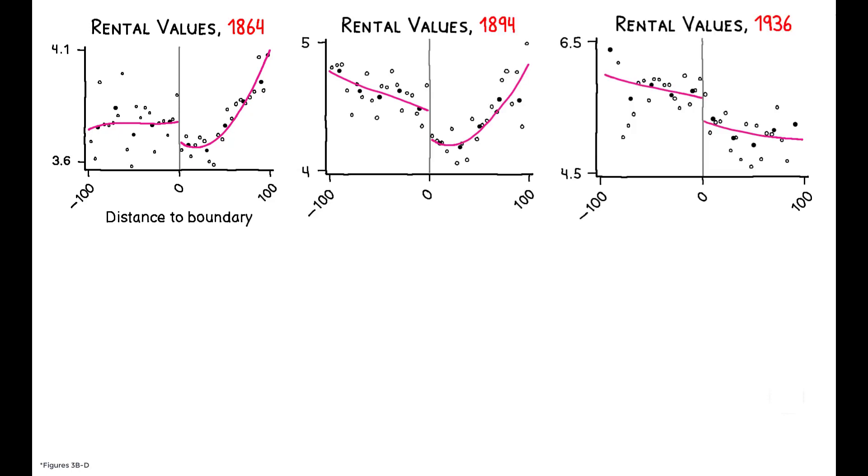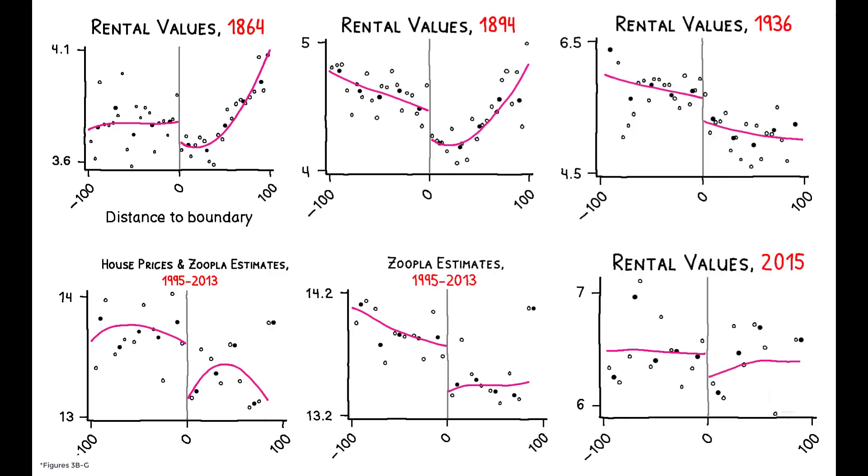What is especially striking, however, is that these sharp differences in property values are not only apparent ten years after the epidemic, they persist for the following 150 years and show no signs of converging.